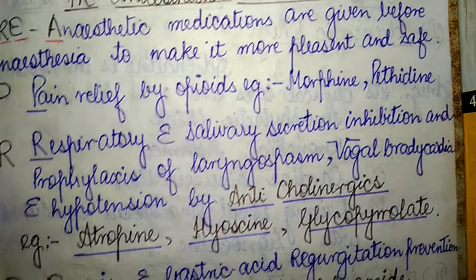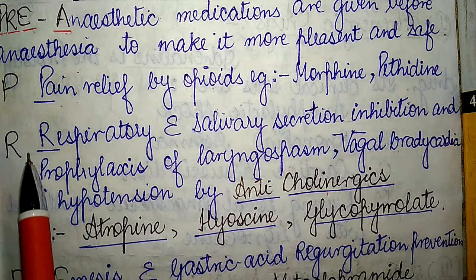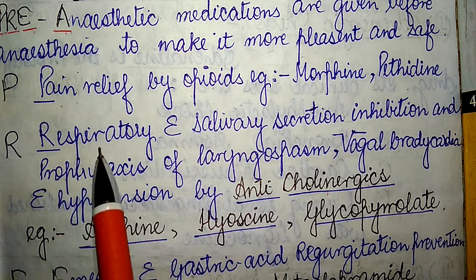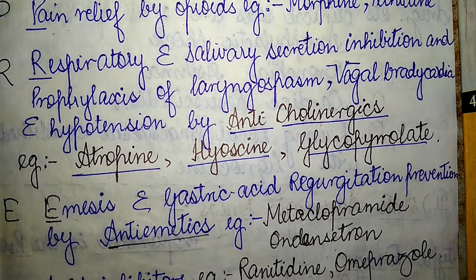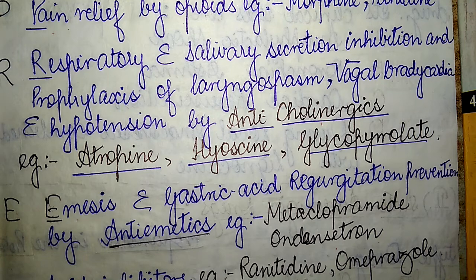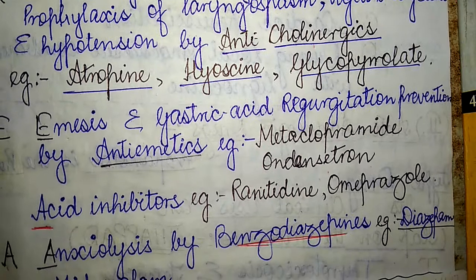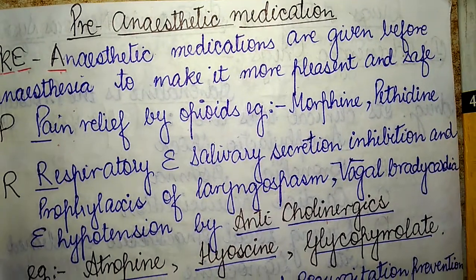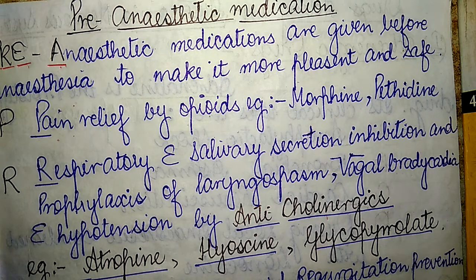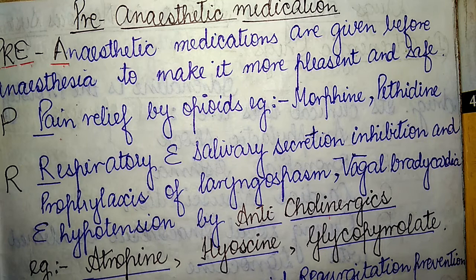In summary: P refers to pain relief by opioids; R refers to respiratory and salivary secretion inhibition; E refers to emesis prevention and gastric acid regurgitation prevention by anti-emetics; and A refers to acid inhibitors and anxiolytic drugs — covering all pre-anesthetic medications given prior to surgery under general anesthesia.